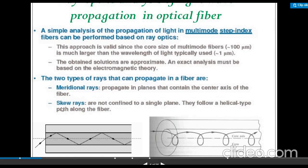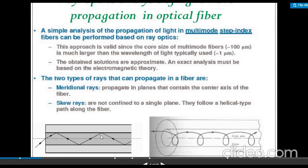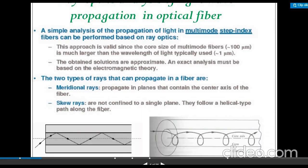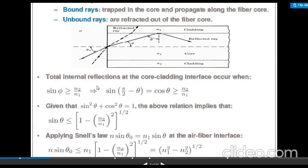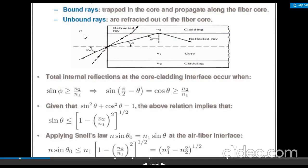Two types of rays can propagate in a fiber: meridional rays and skew rays. A meridional ray propagates in a plane that contains the center axis of the fiber — it passes through the central axis. A skew ray does not pass through the center axis; instead of going directly, it is not confined to a single plane and follows a helical path along the fiber. Rays are also classified as bound rays and unbound rays.